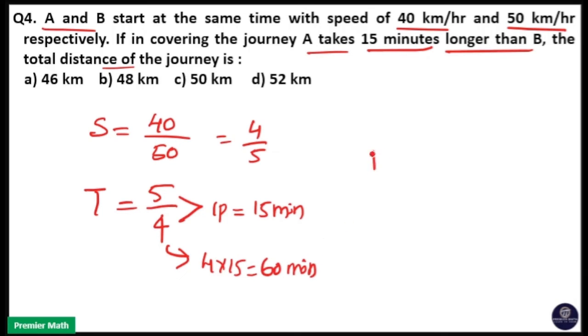That means distance is equal to - if you take 50, you have to take 4. If you take 40, you have to take 5. So I am taking 50 km per hour, 50 km per hour into - don't take the parts here.